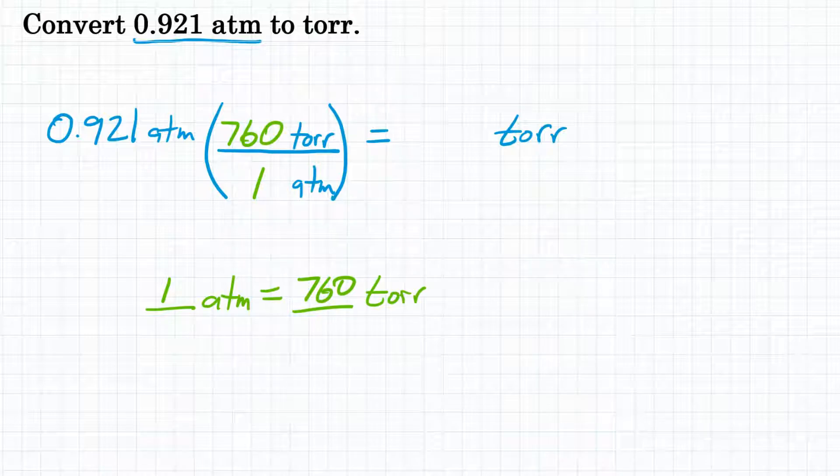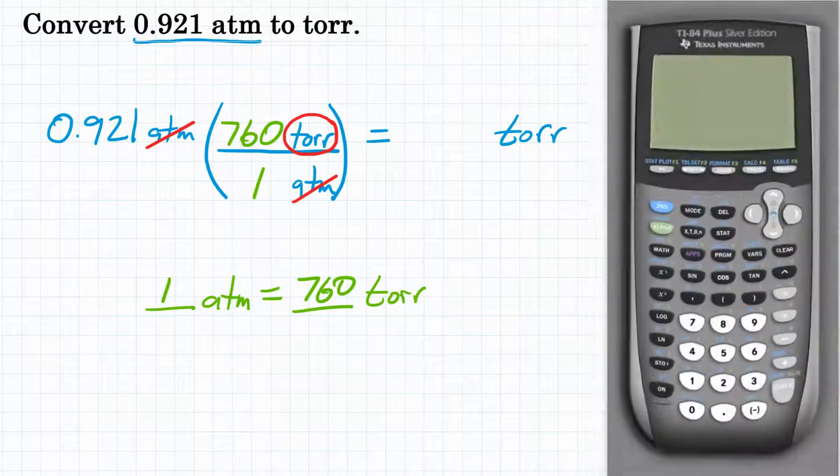Because one atmosphere is 760 torr. So looking at our units, atmospheres will cancel out, because it is starting on top, and it is on the bottom of our conversion factor, so they will cancel. And we will be left with the unit torr, which is what we're looking for. So now we can plug this in our calculator.